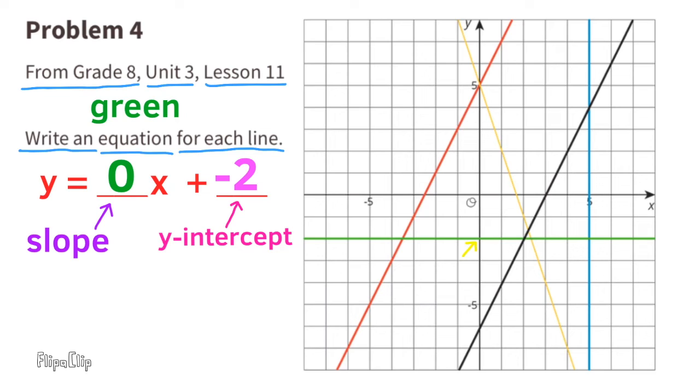So now the equation reads y equals 0 times x plus negative 2, and that's the same thing as y equals negative 2. What that means is no matter where you are on this green line, the y value is negative 2.